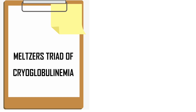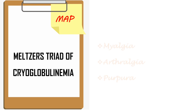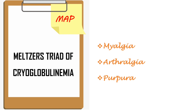M for myalgia, A for arthralgia, P for purpura — Meltzer's MAP. Myalgia, arthralgia, purpura. Female athlete triad.